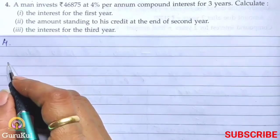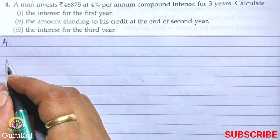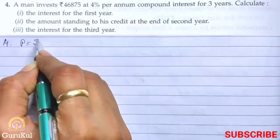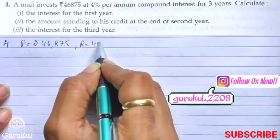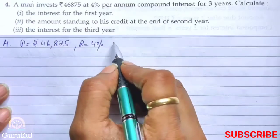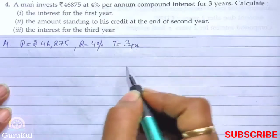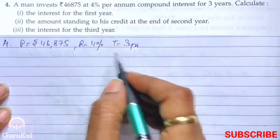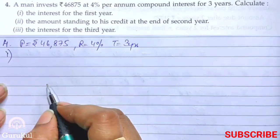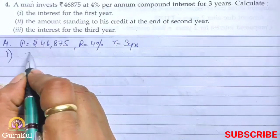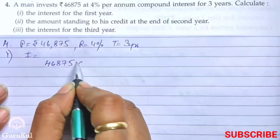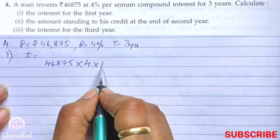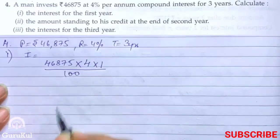Question number 4. A man invested rupees 46,875. So principal is rupees 46,875. Rate is 4% per annum. Compound interest for time is 3 years. The first part asks us to calculate the interest for the first year. So interest equals principal 46,875 into rate 4 into time 1, divided by 100.